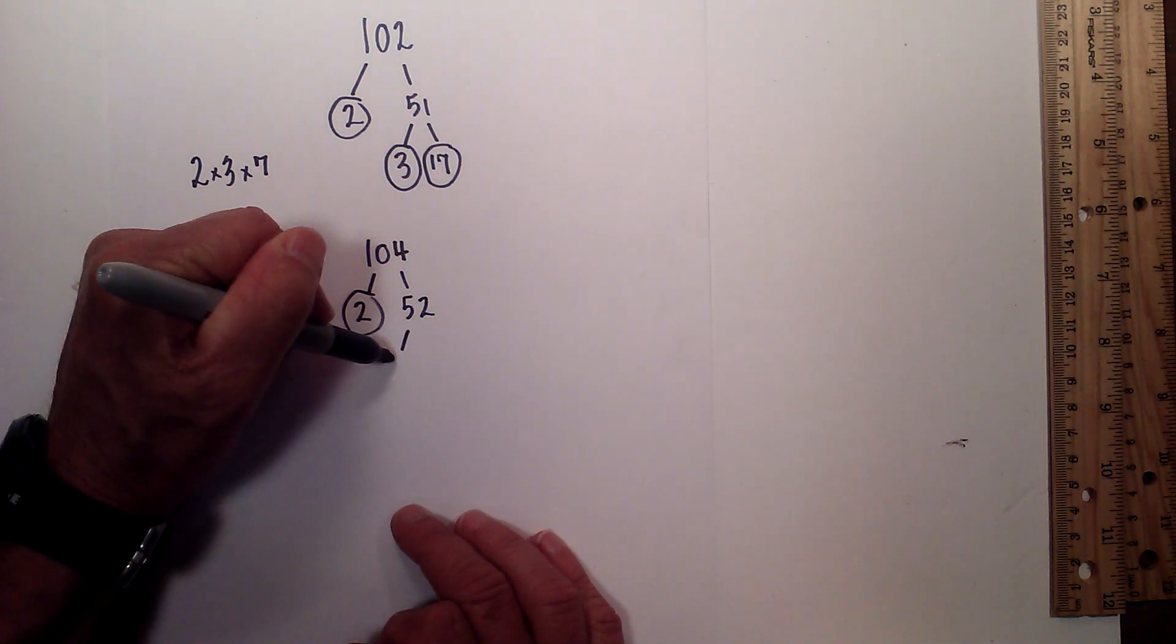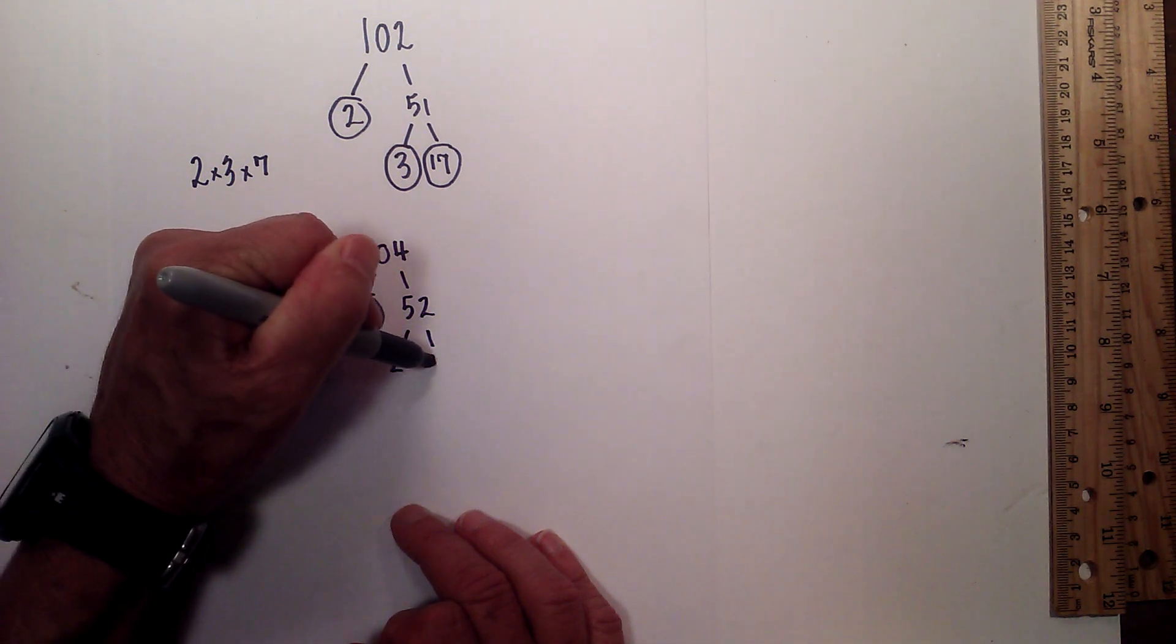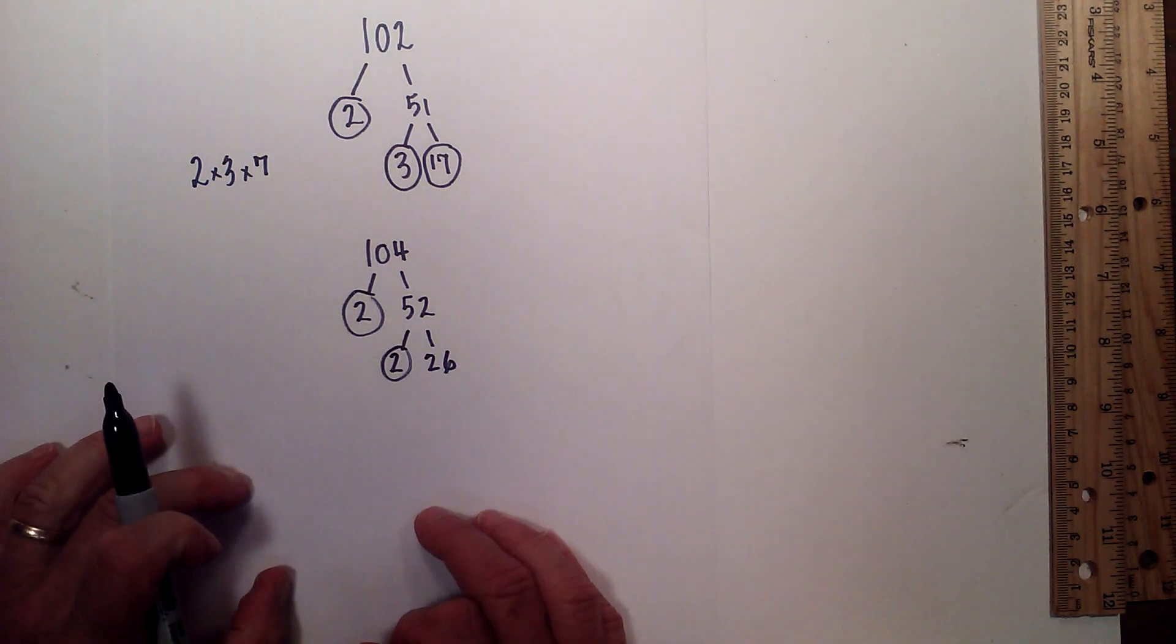Now 52 is equal to 2 times 26. Circle the 2 because it is prime.